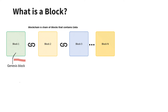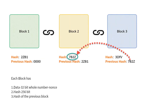Each block consists of information about from whom money has been transferred, to whom it has to be transferred, and how much. For example, consider three blocks in a blockchain — block one, block two, and block three. If you observe each block, it has data, a hash, and the hash of the previous block. The first block, the Genesis block, doesn't have a predecessor — it has only the hash and the previous hash field.